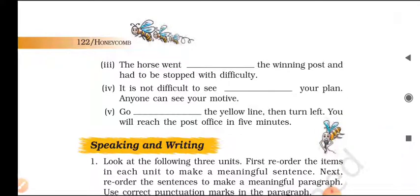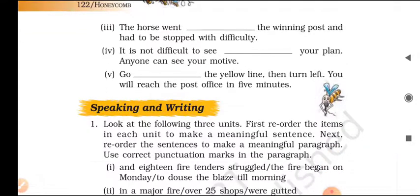Sentence three: The horse went past the winning post and had to be stopped with difficulty. Sentence four: It is not difficult to see through your plan — anyone can see your motives.